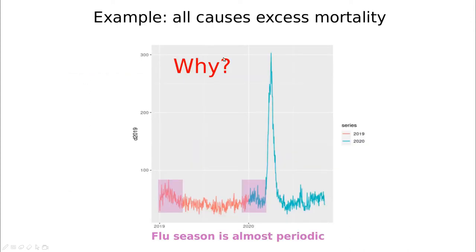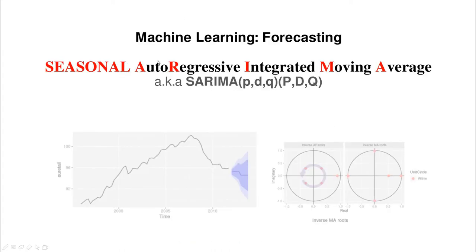We finished last video talking about excess mortality and discussed the idea that we have this periodic kind of excess mortality because of the flu season — every winter mortality increases, not just by the flu but by other reasons. So we need to include in this SARIMA framework some kind of seasonality.